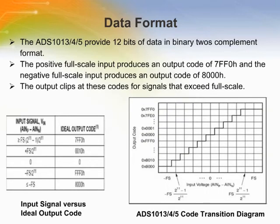The ADS1013, 1014, and 1015 provide 12 bits of data in binary 2's complement format. The positive full-scale input produces an output code of 7FF0H, and the negative full-scale input produces an output code of 8000H. The output clips at these codes for signals that exceed full-scale.